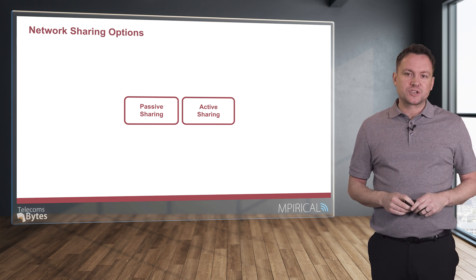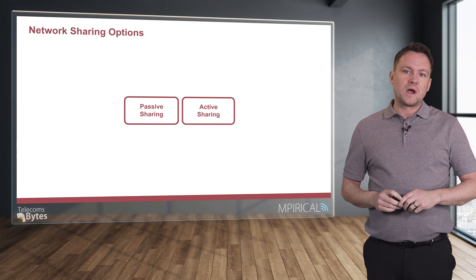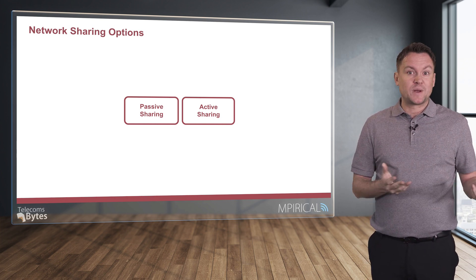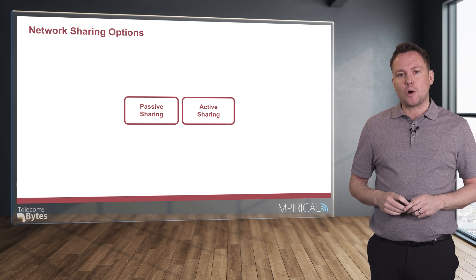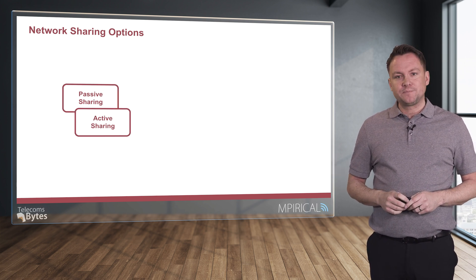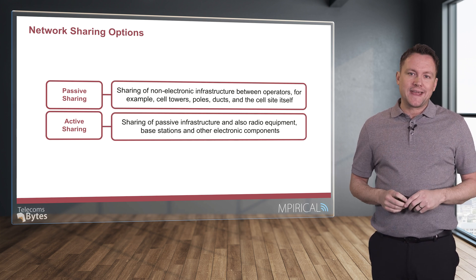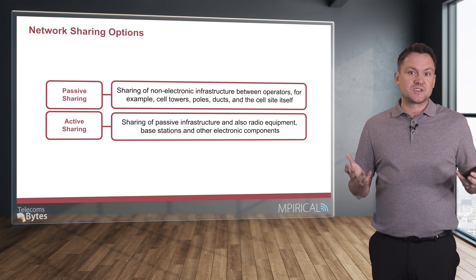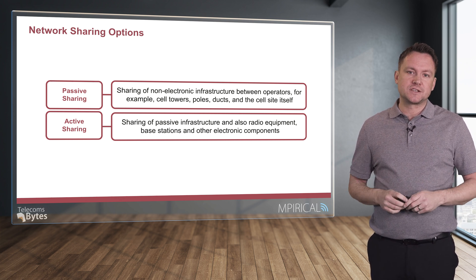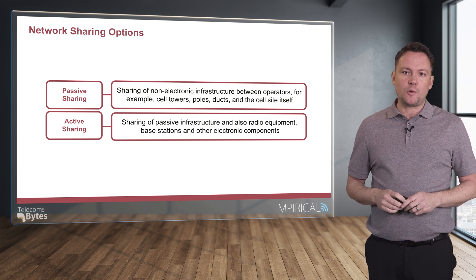In terms of network sharing options — which apply in a neutral host scenario where the RAN is provided and managed by a third party, as well as in network sharing scenarios between operators — we have passive sharing, which involves any of the non-electrical components. This could be the cell site itself, things such as the mast or the ducting, but none of the powered components are shared between operators.